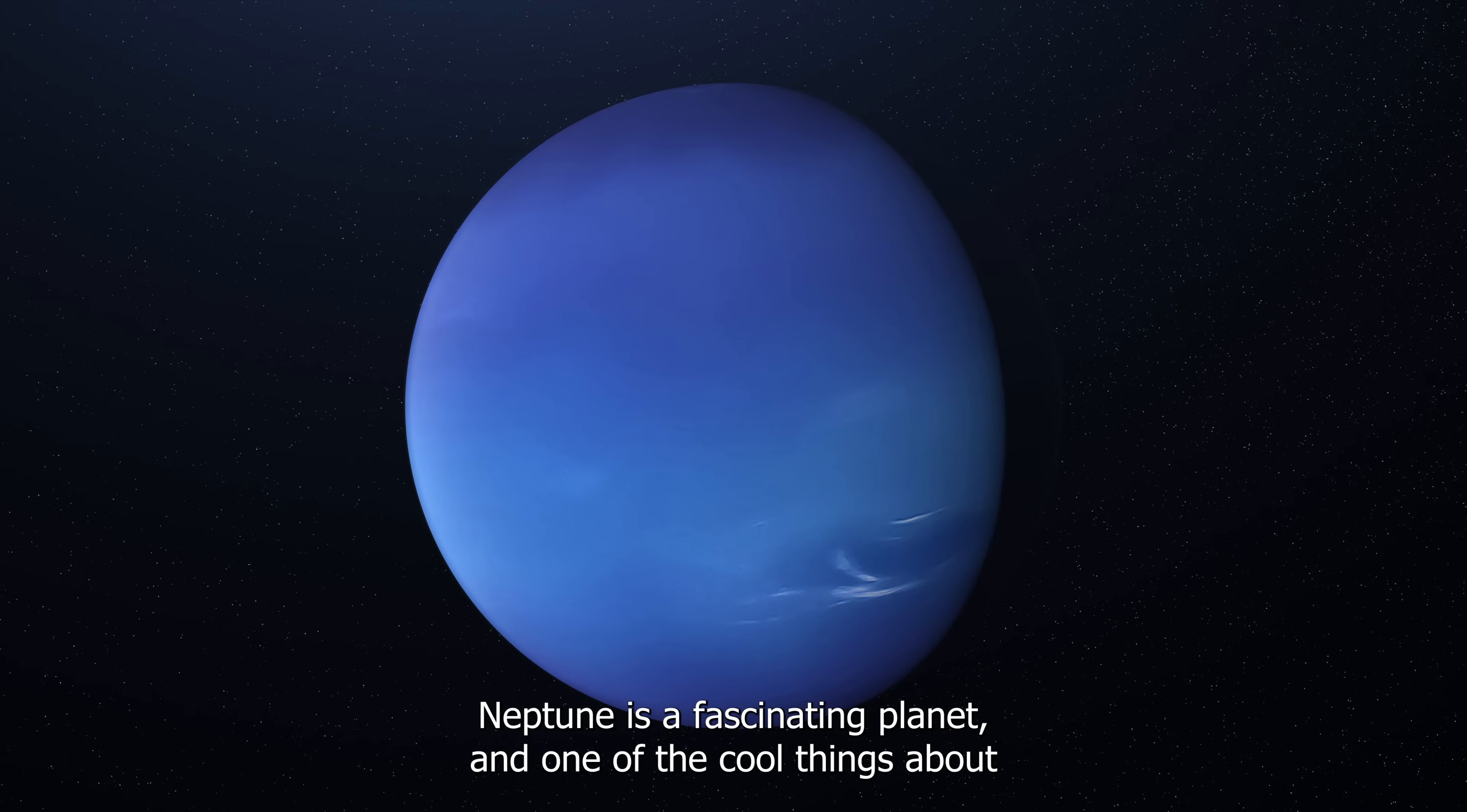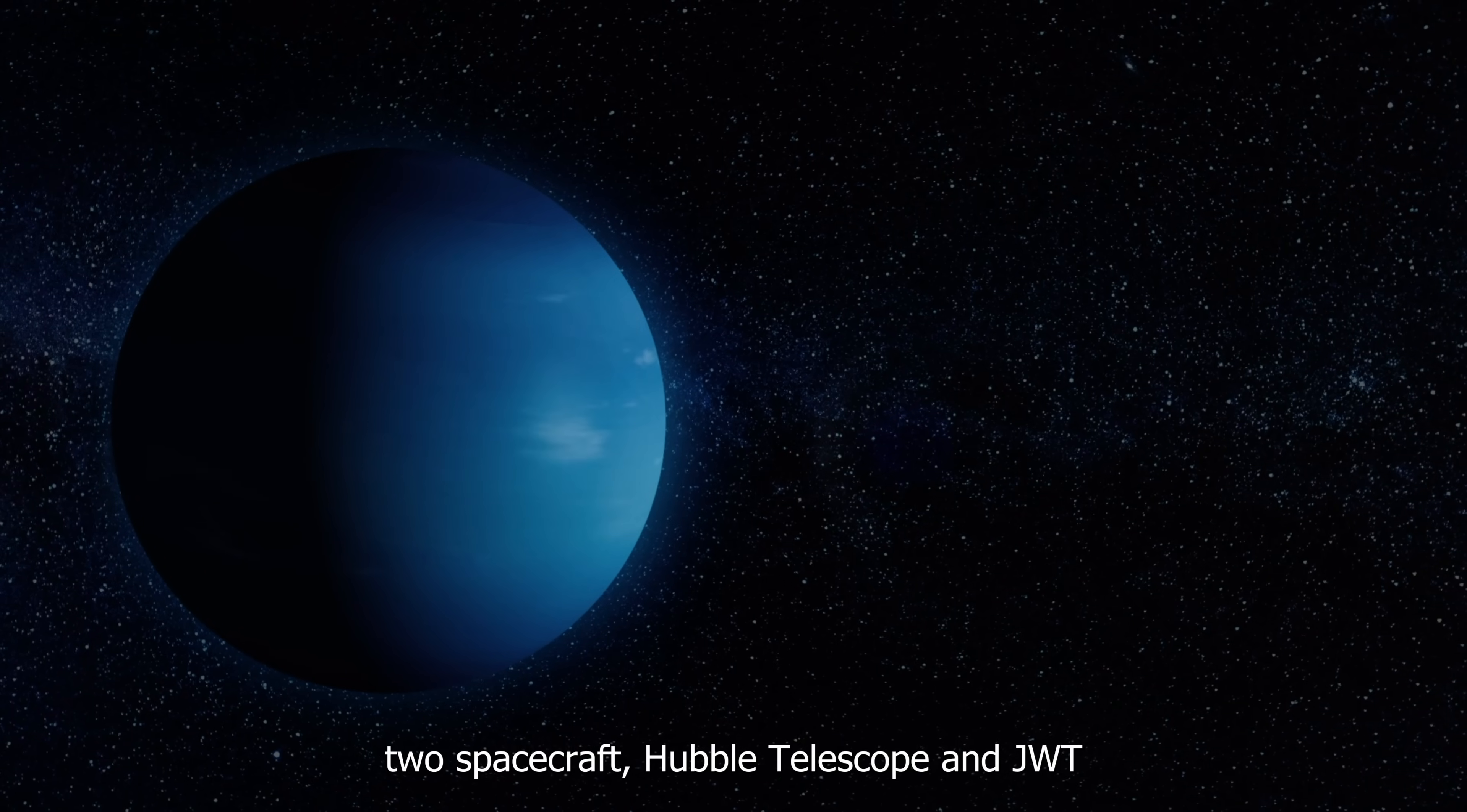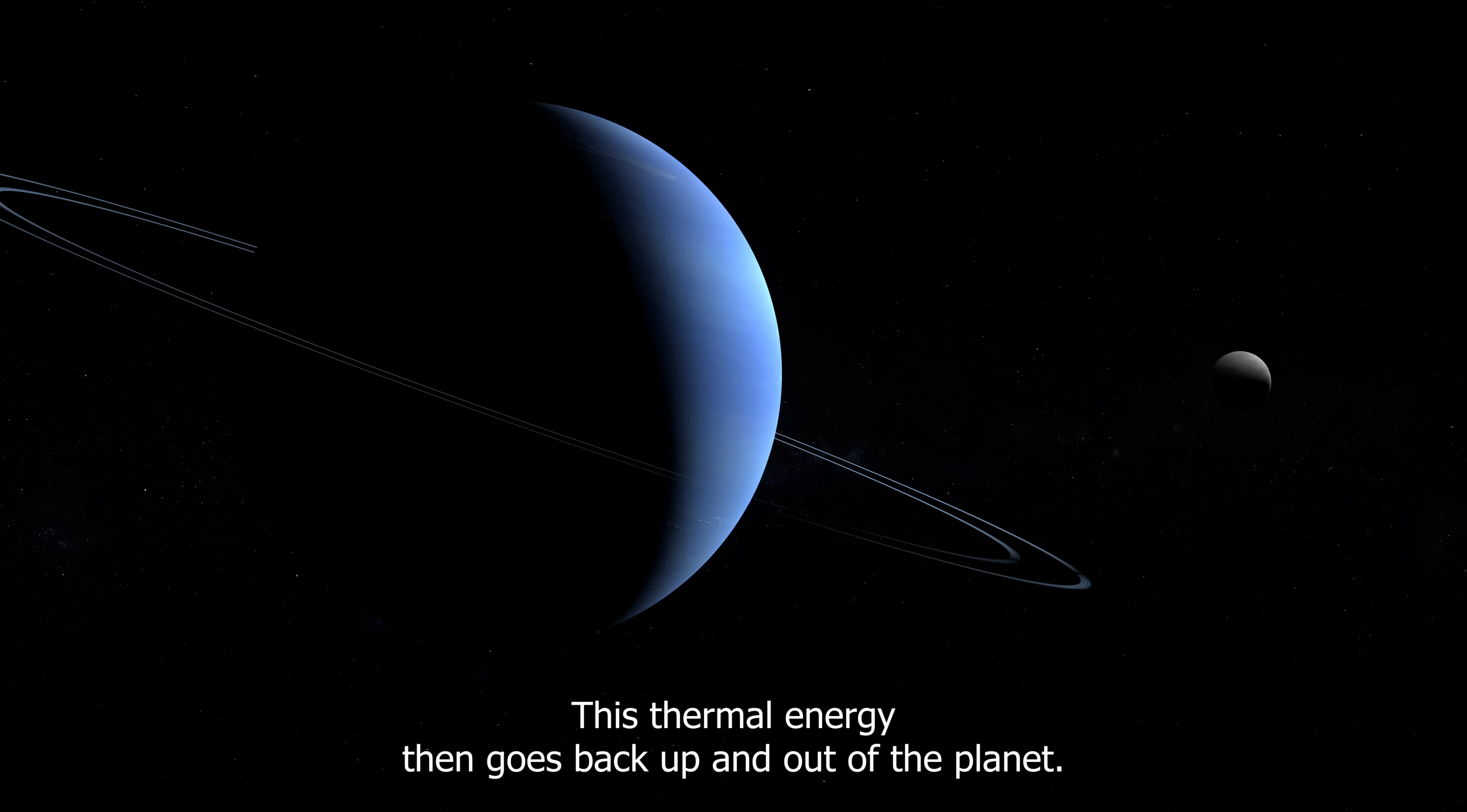Neptune is a fascinating planet, and one of the cool things about it is its warmth, which has puzzled scientists for a long time. Even though it's farther from the Sun than Uranus, Neptune is warmer. The Voyager 2 spacecraft, Hubble Telescope, and JWST have all confirmed this surprising fact. Michael Wong explains that as Neptune slowly gets smaller due to gravity, the material falling inward changes its potential energy into thermal energy. This thermal energy then goes back up and out of the planet. It's like Neptune has its own internal heat source.